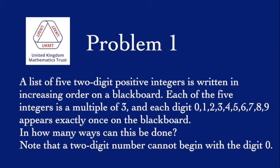Problem 1. A list of five two-digit positive integers is written in increasing order on a blackboard. Each of the five integers is a multiple of 3, and each digit from 0 to 9 appears exactly once on the blackboard. In how many ways can this be done? Note that a two-digit number cannot begin with a digit 0.